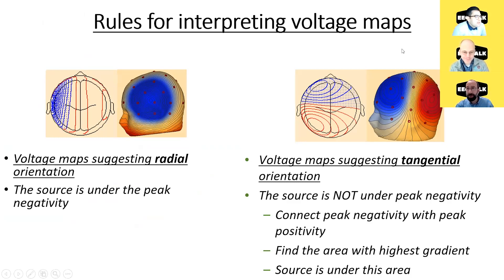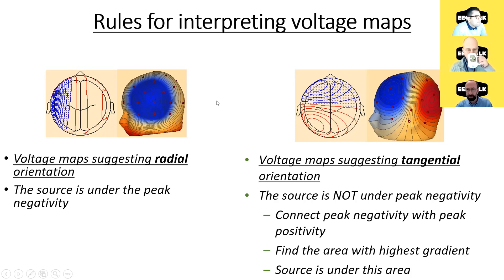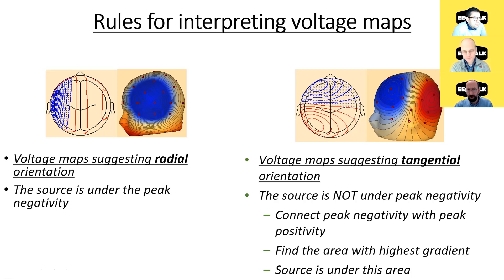The first step is to determine whether this is a radial or tangential orientation. If you see a large-amplitude circumscribed negativity surrounded by widespread low-amplitude positivity, this is a radial source — your negative phase reversal works well and your source is just under the peak negativity. But if you see a peak negativity and a peak positivity — two poles — you connect them and look where the isoelectric lines are closest together, where the voltage gradient is highest: that's your source, not under the peak negativity but further away.